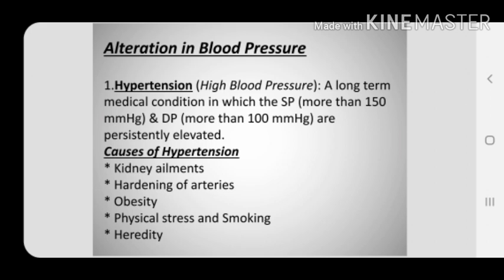Blood pressure changes naturally due to various factors and most changes are normal and predictable. However, if blood pressure readings are persistently very high or very low compared to normal readings, this alteration is an indication of health issues. The alteration may be of two types: hypertension and hypotension. Hypertension, also known as high blood pressure, refers to a long-term medical condition in which systolic and diastolic pressure are persistently elevated. Some causes of hypertension are kidney ailments, hardening of arteries, obesity, physical stress, smoking, and heredity.